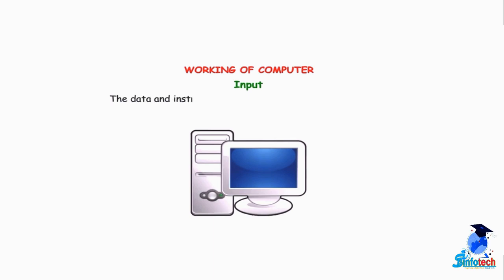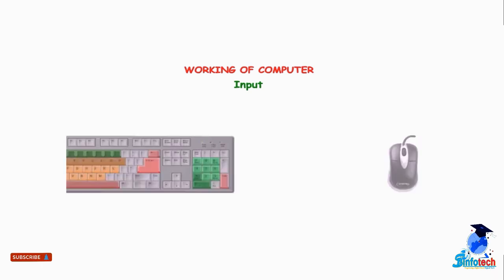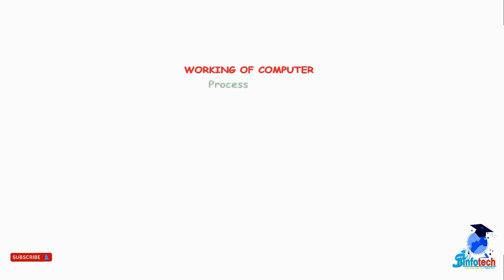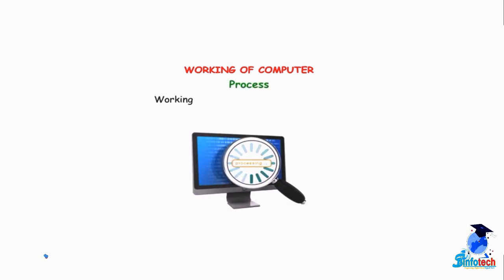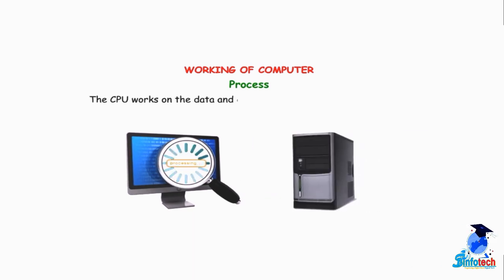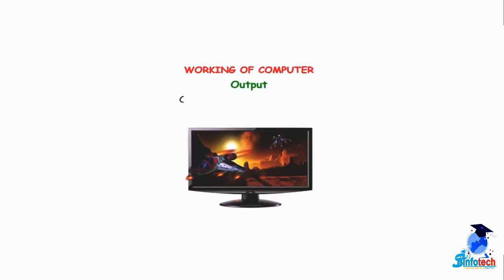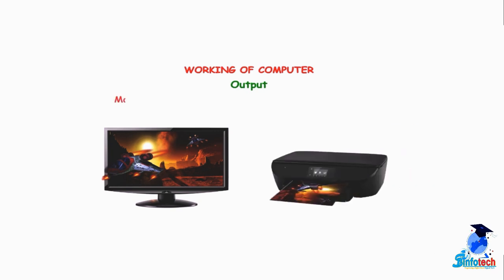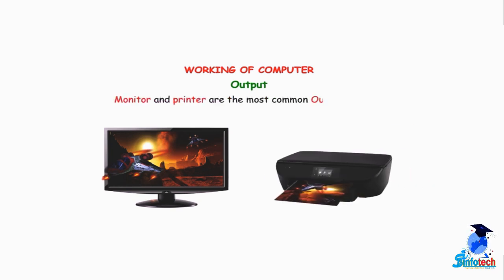The data and instructions that we enter into a computer are called input. We input data using a keyboard and a mouse. Working on the data is called processing. The CPU works on the data and does all the thinking and calculations. Output means the final result. When the CPU finishes processing the data, the output is displayed on the monitor. Monitor and printer are the most common output devices.